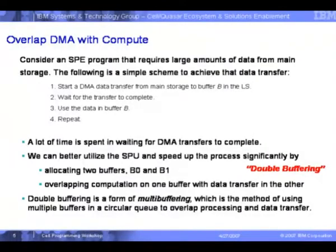Double buffering builds on top of the DMA list technique. We're trying to overlap DMA transfer with compute — when a DMA is going on, we operate on the previous chunk of data that was already fetched. This is a standard technique, not a new invention by IBM; other architectures use it too. We start one DMA list transfer, and the key is to overlap that DMA transfer with computation. The overlap comes between computing on the data and then initiating the next DMA.